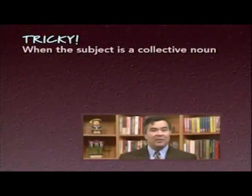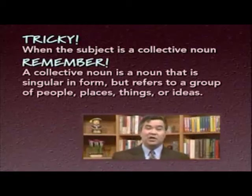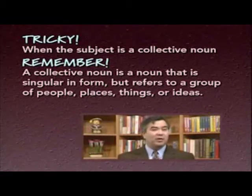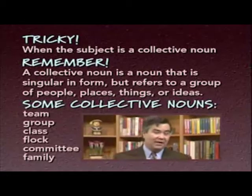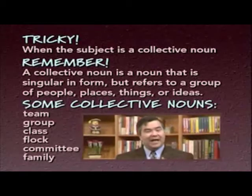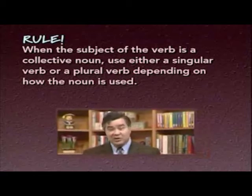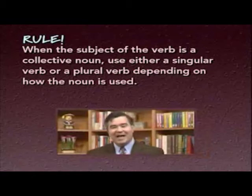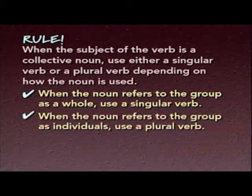Here's another tricky situation for subject-verb agreement. In some sentences, the subject of the verb is a collective noun. A collective noun is a noun that's singular in form — it usually doesn't end in S or ES — but which refers to a group of people, places, things, or ideas. Some examples of collective nouns are: team, group, class, flock, committee, family. In each of these cases, the word refers to a number of people gathered together under a single word. Here's the rule: when the subject of the verb is a collective noun, use either a singular verb or a plural verb, depending on how the noun is used. When the noun refers to the group as a whole, use a singular verb. When the noun refers to the group as individuals, use a plural verb.